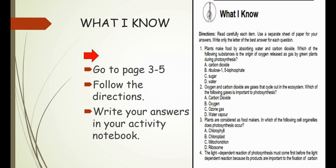Number 1: Plants make food by absorbing water and carbon dioxide. Which of the following substances is the origin of oxygen released as a gas by green plants during photosynthesis? Is it A, carbon dioxide; B, ribulose 1,5-biphosphate; C, sugar; or D, water? The correct answer is letter D, water. Are you ready to answer? Let's go.